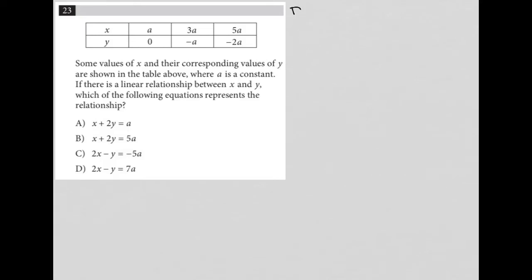This question is a diagram question. It's more specifically a table. It looks like an XY table, right? We have X values on top, we have Y values on the bottom. So the question actually tells us that some values of X and their corresponding values of Y are shown in the table above, where A is a constant. Okay, we got that.